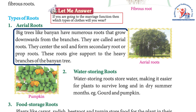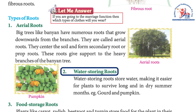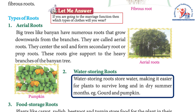Types of roots: Aerial roots — big trees like banyan have numerous roots that grow downwards from the branches. They are called aerial roots. They enter the soil and form secondary roots, or prop roots. These roots give support to the heavy branches of the banyan tree.